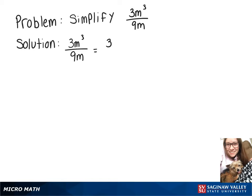So the top, I can split 3 into just 3 times 1, and then I also want to split up that m cubed and rewrite it as m times m squared. On the bottom, since 3 goes into 9 3 times, we can rewrite 9 as 3 times 3, and then we have our m.